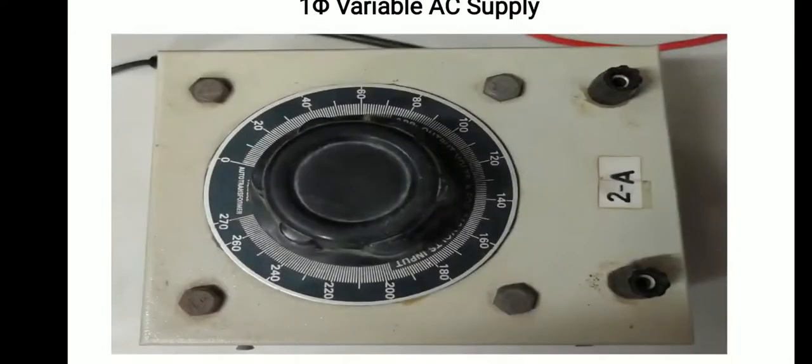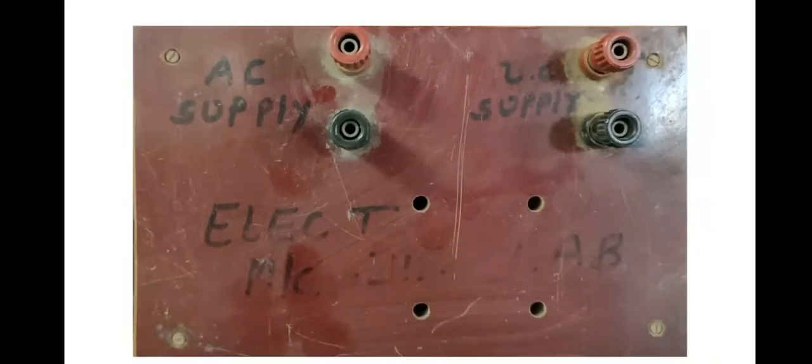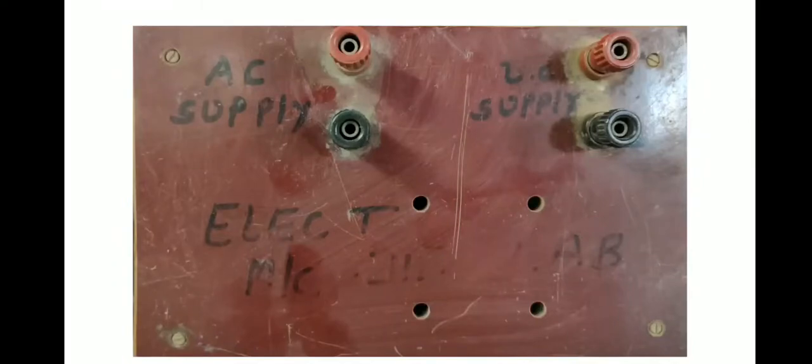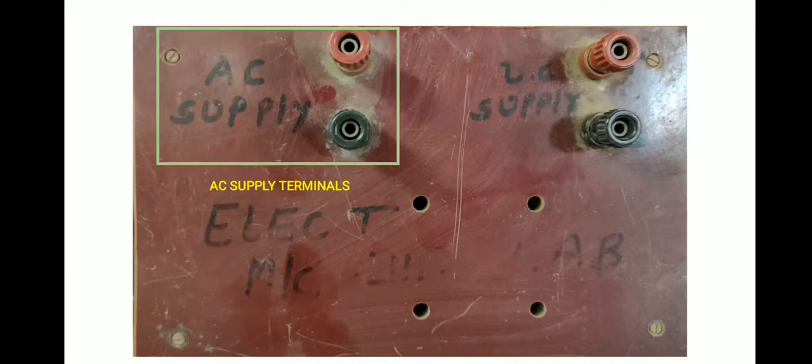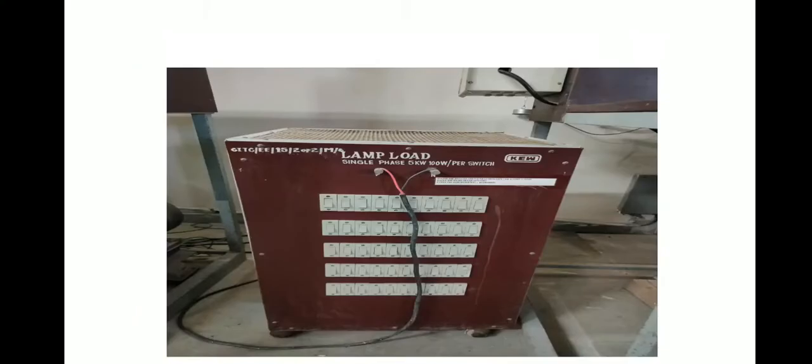You'll also use a single phase AC variac which supplies the variable AC voltage. This is my rectifier board which converts my AC supply to DC supply. This is the lamp load which I am going to use as my electrical load.